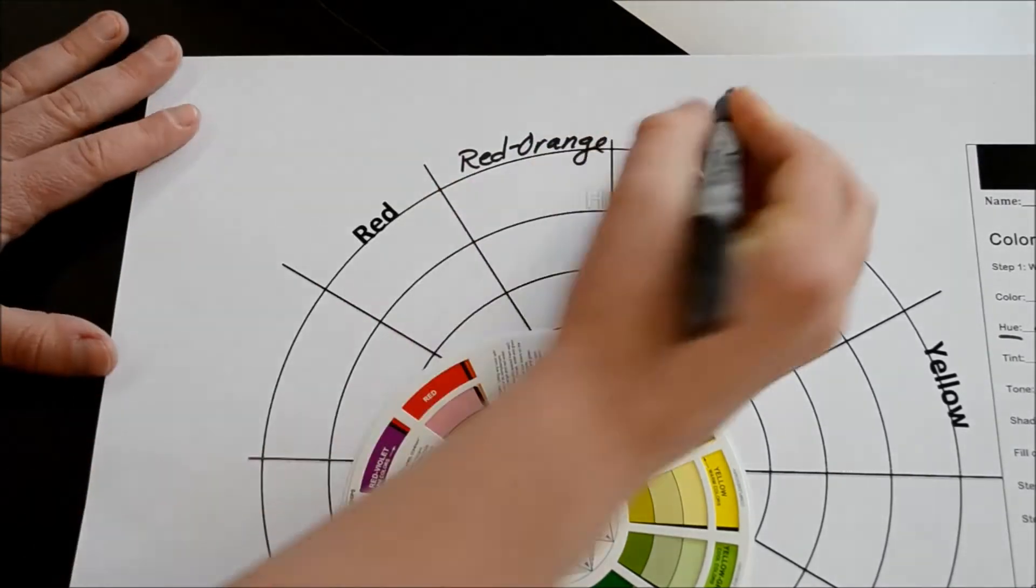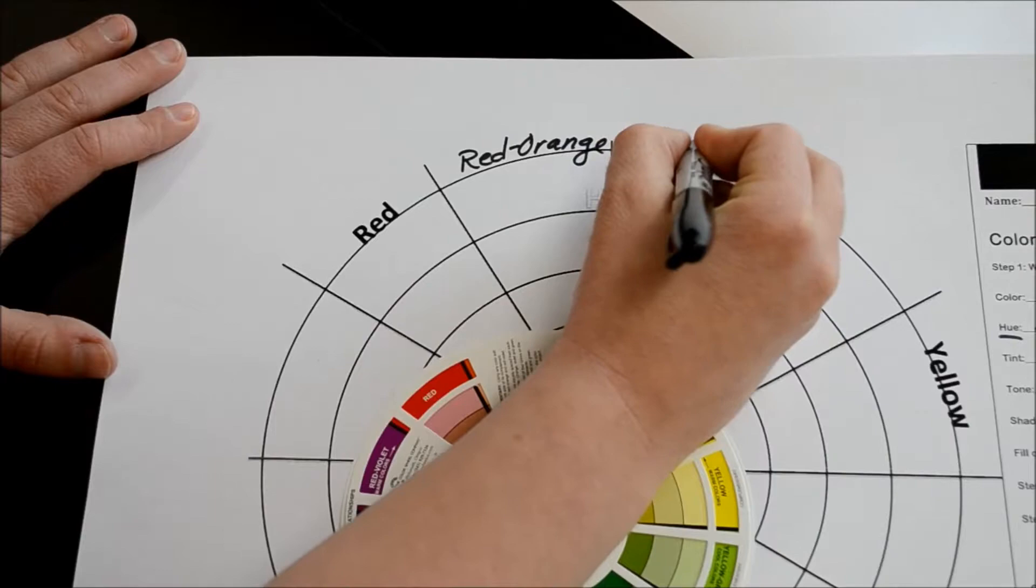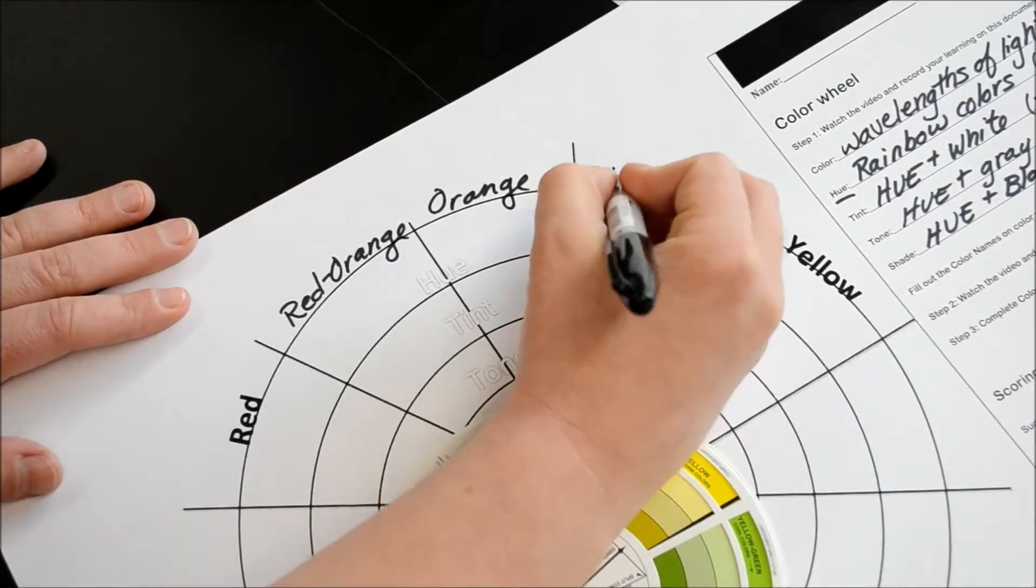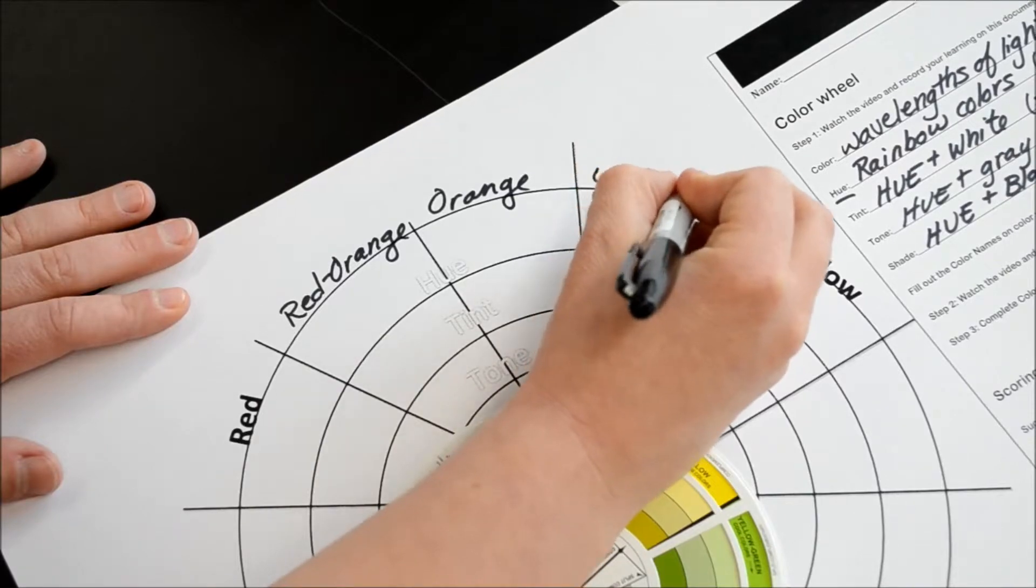After red-orange is orange. You're going to pick up on a pattern. After orange is yellow-orange. You always list the primary color first.